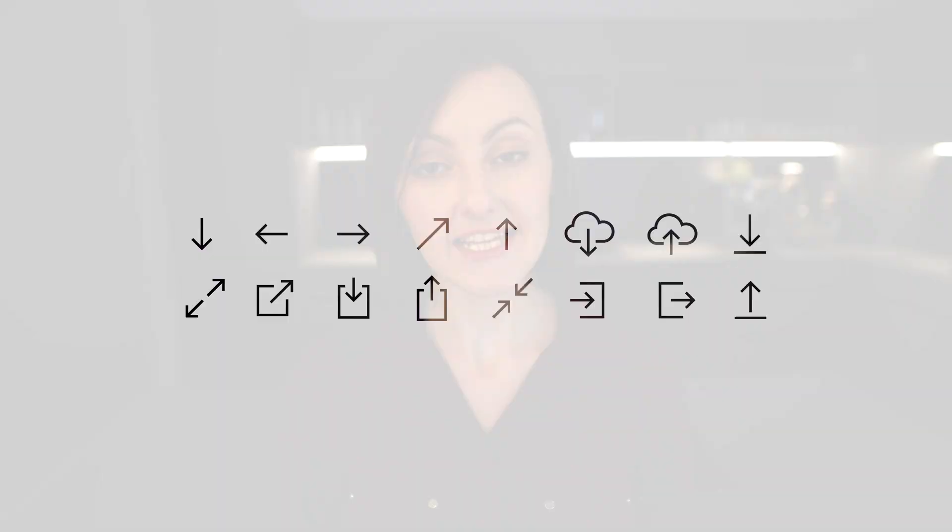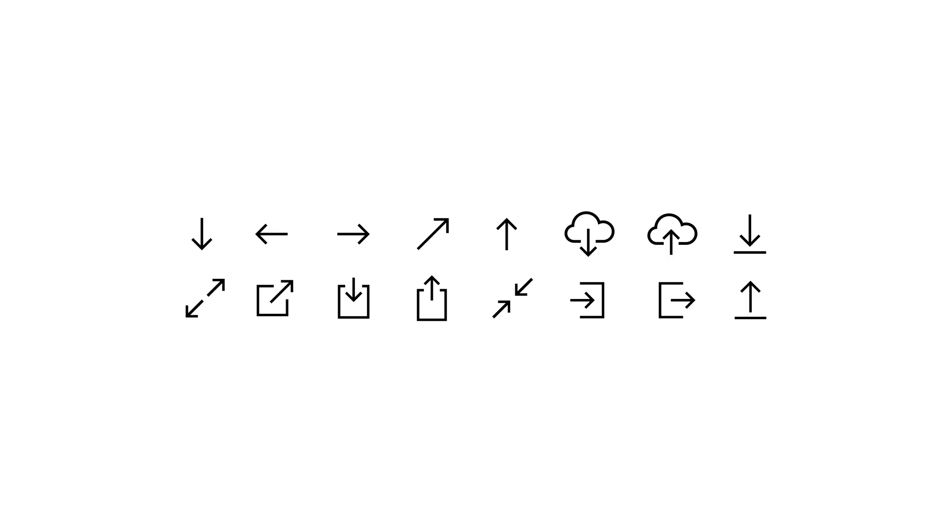The UIKit icon library got a small update as well. We added two new icons — close circle and arrow down/arrow up — as well as the Bluesky icon, which sneaked into the previous UIKit release. We also updated all icons containing arrows to fit the overall UIKit outline style.